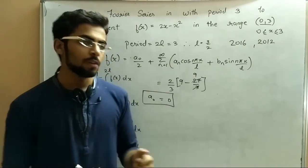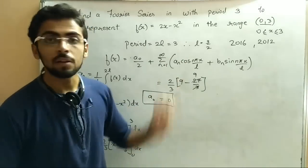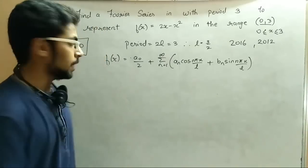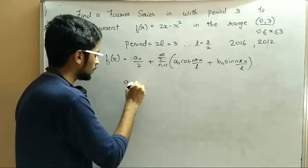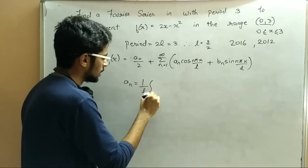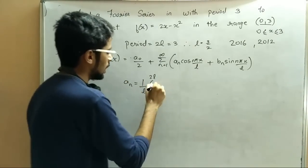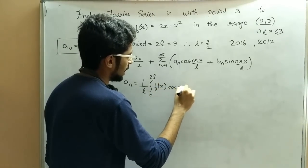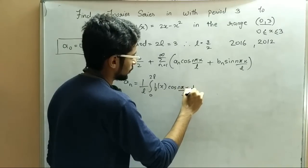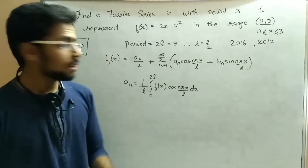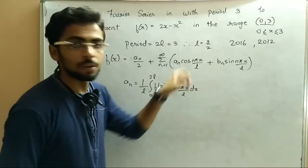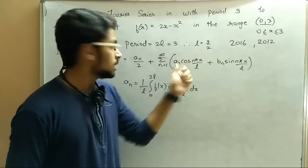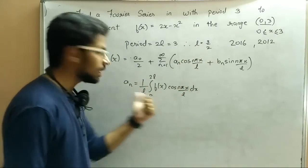Now we will calculate the value of An. So An equals to 1/L times the integral from 0 to 2L of f(x) cos(nπx/L) dx. I will repeat: we are calculating only An here, not the Bn part. So we will put the values in: 1/L gives 2/3, limits are 0 to 3.